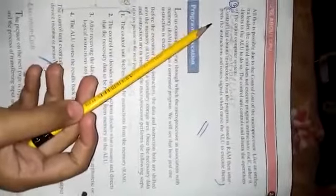Then question number 7: Define control unit. Control unit obtains instruction from the programs stored in RAM, then interprets the instruction and issues signals which cause the ALU to execute them.